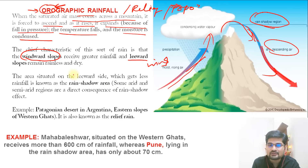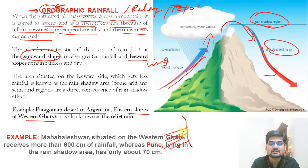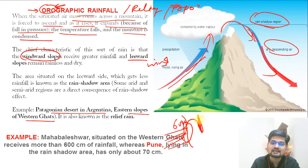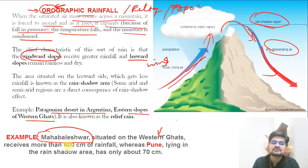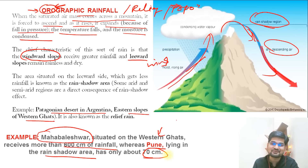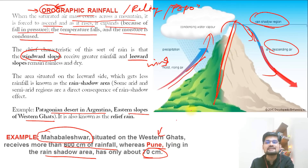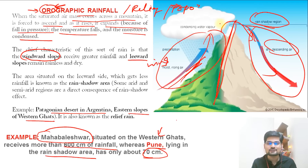On the eastern slopes of the Western Ghats, the monsoon or sea breeze carries moisture and produces almost 600 cm of rainfall. But on the other side — the leeward side — there is only 60 to 70 cm of rainfall. The best example: Mahabaleshwar in the Western Ghats receives 600 cm of rainfall, whereas Pune, lying in the rain shadow area, receives only 70 cm. This extreme contrast between the windward and leeward slopes is characteristic of orographic rainfall.